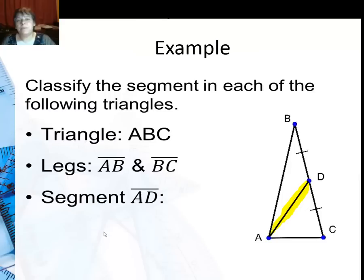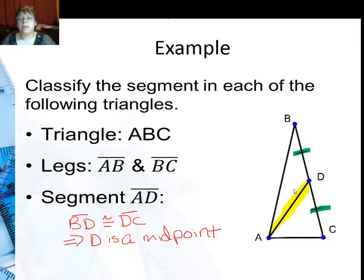So in this example for the table on your notes, we're going to classify the segment in each of the triangles. So I have triangle ABC here, which has legs AB and BC. I can see from the congruent marks that BD is congruent to DC, so D is a midpoint. So since D is a midpoint, this special segment right here is the median.